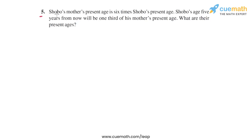Question 5 says that Shobo's mother's present age is six times Shobo's present age. Shobo's age five years from now will be one-third of his mother's present age. What are their present ages? The unknowns in this problem are the present ages of Shobo and that of his mother.